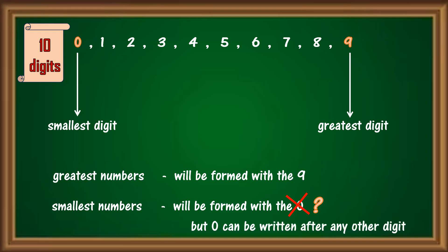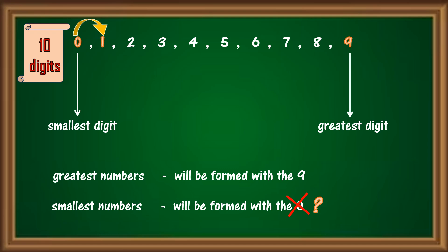Then it is counted as a number. And which is the next smallest digit after 0? 1. So, in order to form the smallest numbers, 0 will be written after the next smallest digit 1.